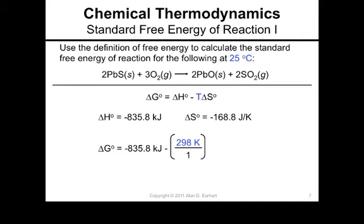So 25 degrees Celsius is 273.15, and since 25 Celsius goes to no decimal places, I'll round my Kelvin to no decimal places. Delta G equals Delta H minus T times Delta S times the minus 168.8 joules per Kelvin, and then we just put those together.